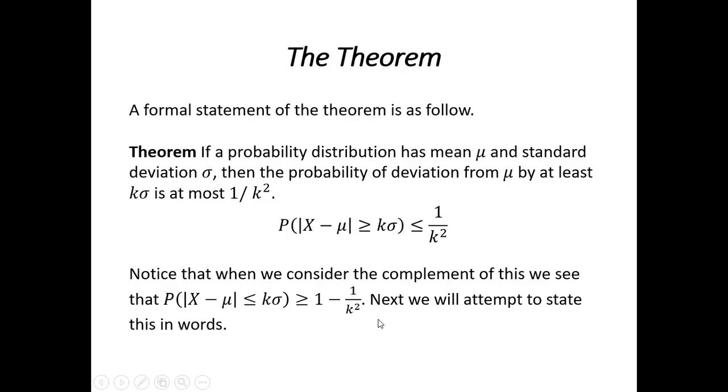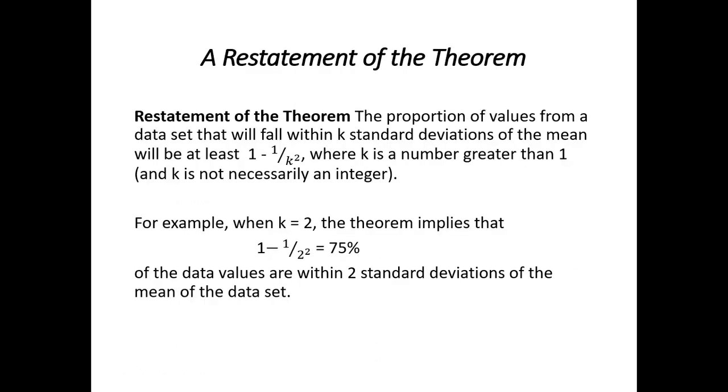Let's try to simplify this by stating it in easier to understand words. The proportion of values from a data set that fall within k standard deviations of the mean will be at least 1 - 1/k², where k must be a number greater than 1, and it's possible that k is not necessarily an integer.